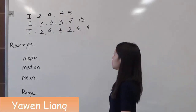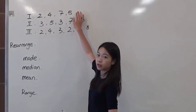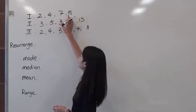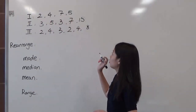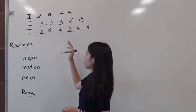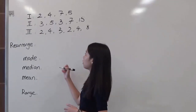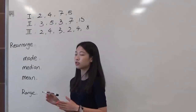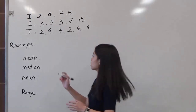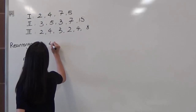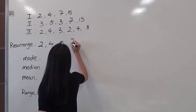So in our case, we have three different scenarios. We're going to do the first one first. The first scenario, we have four numbers: 2, 4, 7, and 5. So we have to rearrange these numbers in order to find the median easier. I would choose to do it in ascending order — you can arrange them either ascending or descending. So in ascending order, we will have 2, 4, 5, and 7.